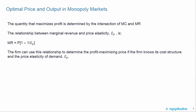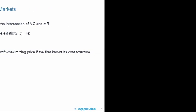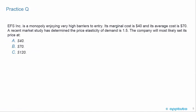In the next slide, we'll do a practice problem to show exactly how to work through this. EFS Inc. is a monopoly enjoying very high barriers to entry. Its marginal cost is $40 and its average cost is $70. A recent market study has determined the price elasticity of demand is 1.5.